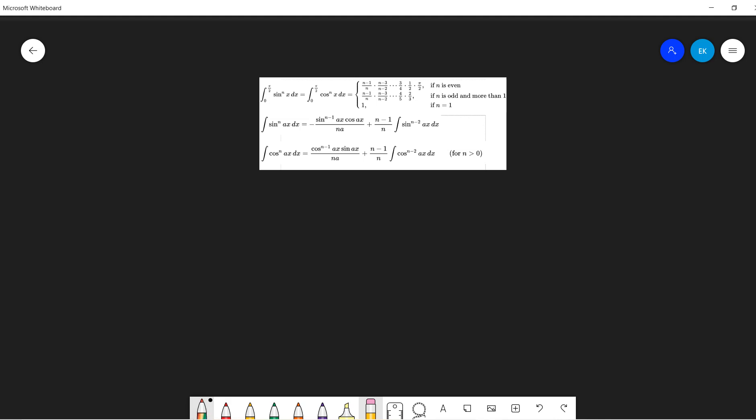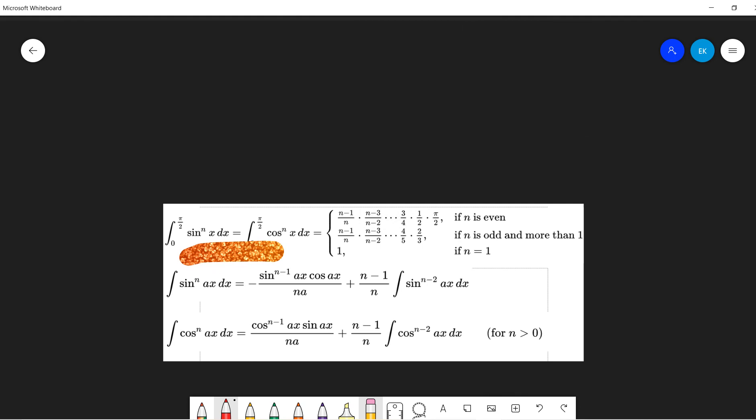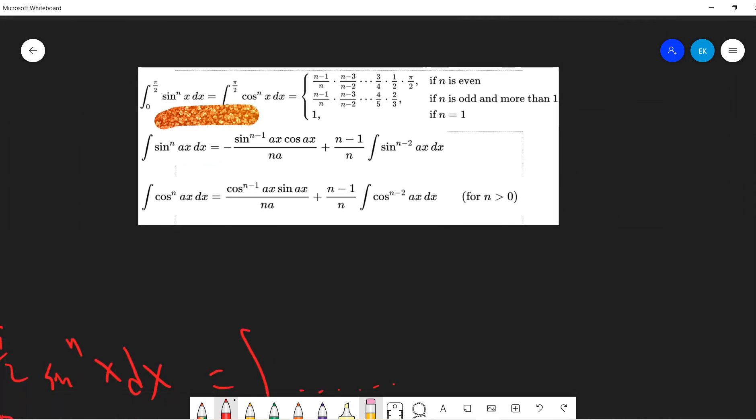Welcome guys. So if you go online there are many calculus problems talking about this one. Basically this formula: the integral from 0 to pi over 2 of sine to the power n dx equals something. So today I'm going to prove this formula.